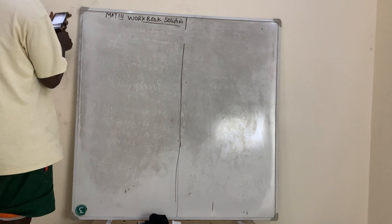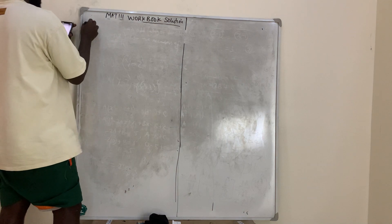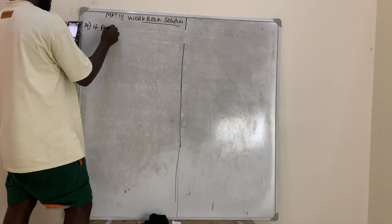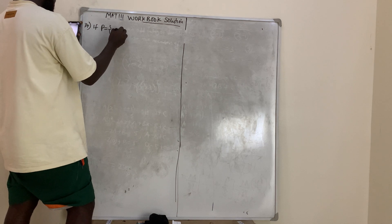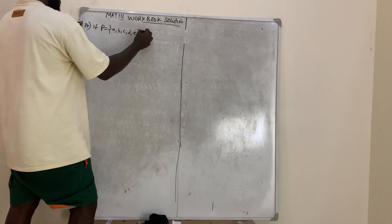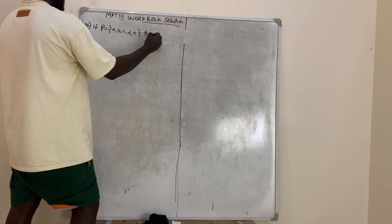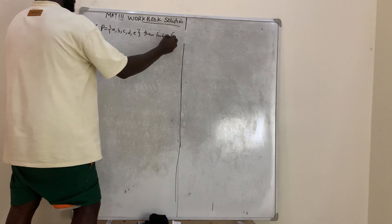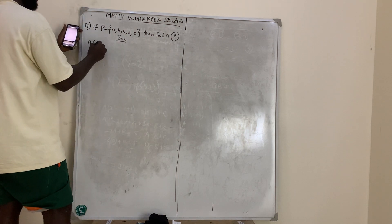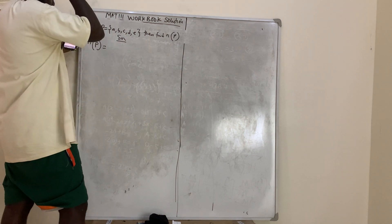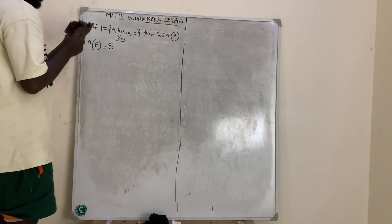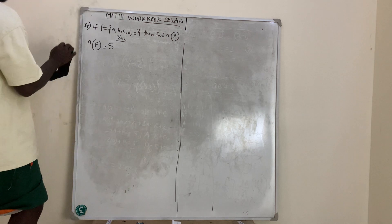Question number 34: If P = {a, b, c, d, e}, find the cardinality of P. The cardinality of P simply means the number of elements in P. Counting: one, two, three, four, five — there are simply five elements. So the cardinality of P is 5.